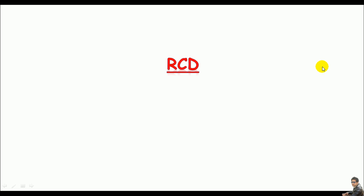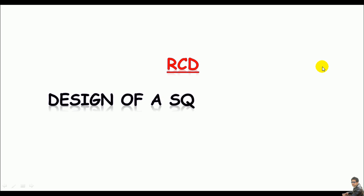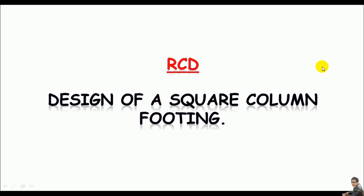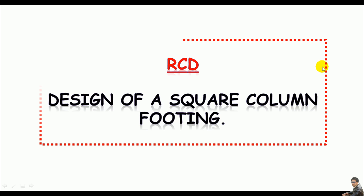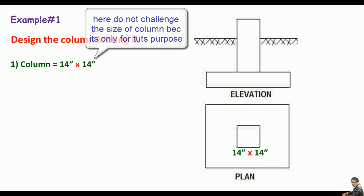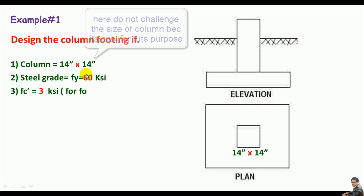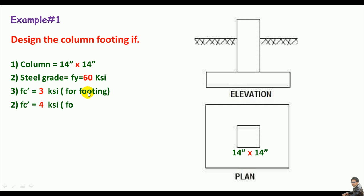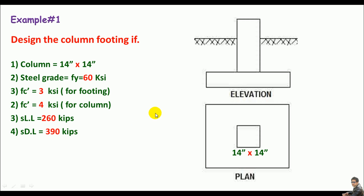Welcome back to SLK Toots. In this section we'll be learning the design of a single square column footing. We're asked to design a square column footing with a column 14 by 14 inches. Material properties: steel Fy = 60 ksi, Fc prime for footing = 3 ksi, Fc prime for column = 4 ksi. Service live load = 260 kips, service dead load = 390 kips, and allowable bearing capacity 5 feet below grade = 6 ksf.